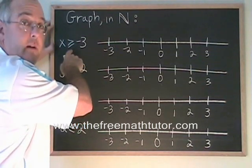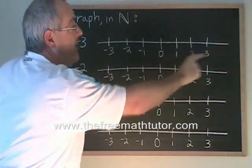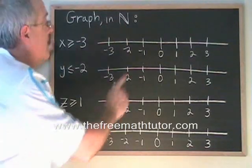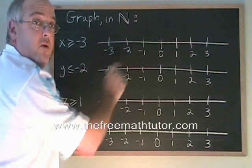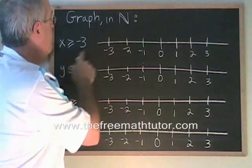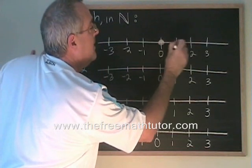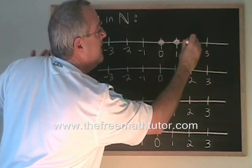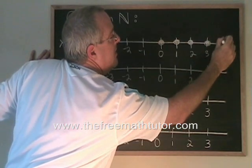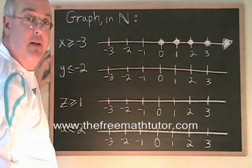x greater than or equal to negative 3 would seem to be these numbers going on and on in the positive direction, but be careful. This is in natural numbers. Natural numbers do not include negative 2 and negative 1. Even though they are greater than negative 3, they will not be part of the answer. The natural numbers that are greater than or equal to negative 3 start at 0 and include all of the positive natural numbers. So we draw an arrow or we put three dots to indicate that it continues going on past the number 3.